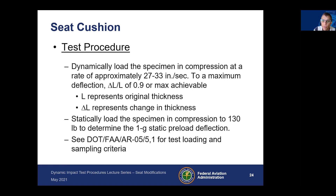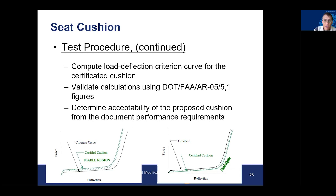The test procedure dynamically loads the specimen at approximately 30 inches per second up to a maximum deflection of 0.9. You also statically load the specimen in compression to 130 pounds to determine the 1G static preload deflection, which assesses how much the foam supports an ATD buttock and covers the SRP testing point. Then you compute a load deflection criterion curve, validate your calculations using the report, and determine the acceptability of the proposed cushion from the document performance requirements.